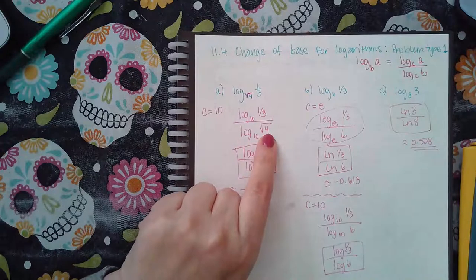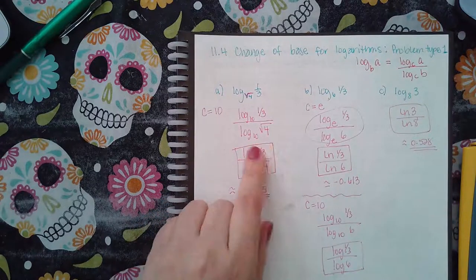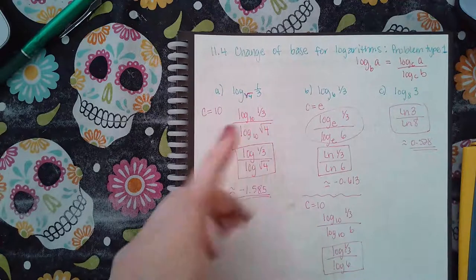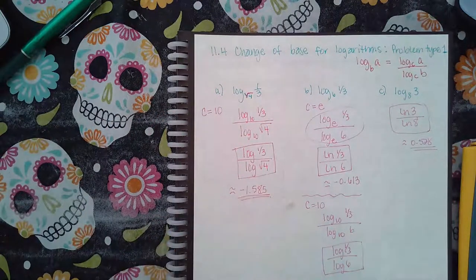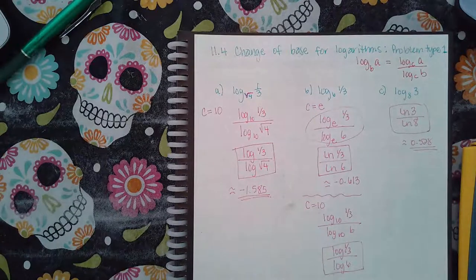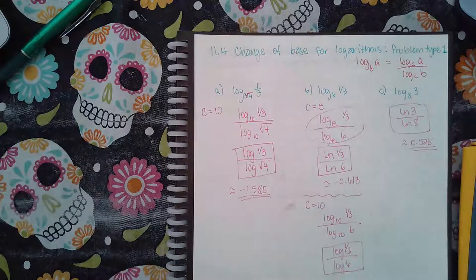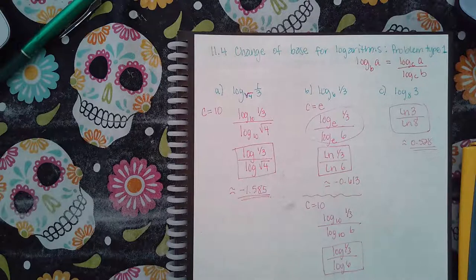Okay, then because it says log base 10, that's just the common log, so you don't have to write the base 10. You can just write log of one third over log of the square root of four, and then when you plug that into your calculator you end up with the value negative 1.585.